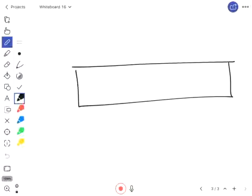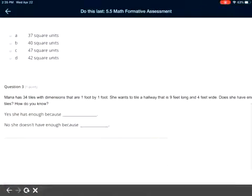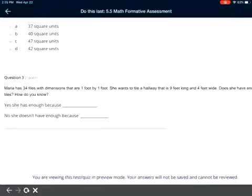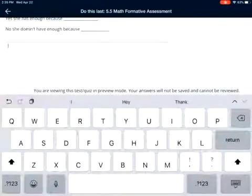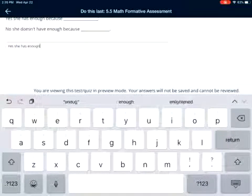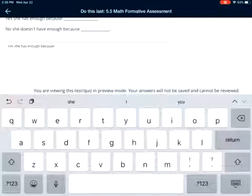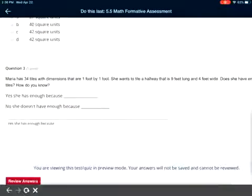What is that area, and does she have enough tiles to cover that up? You'd use those sentence starters here. If you think she does, you would say 'yes, she has enough because...' and then explain why.